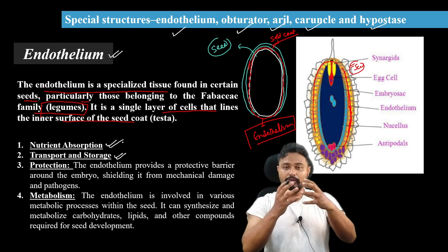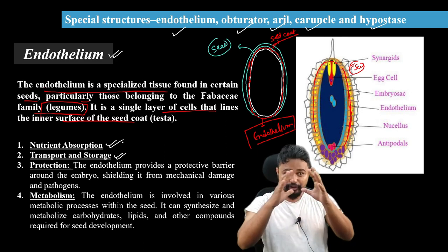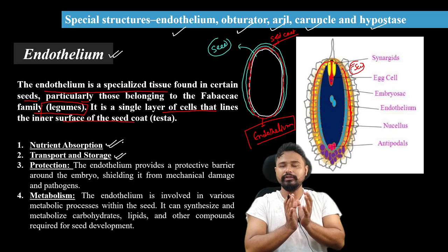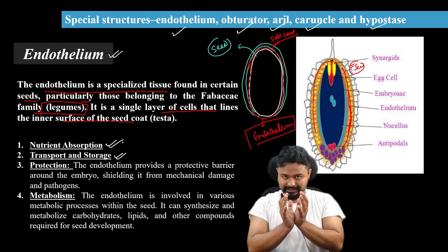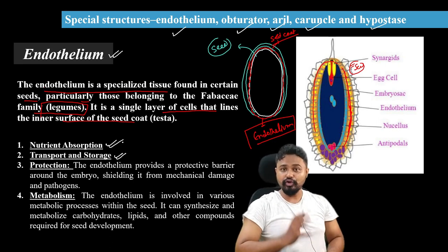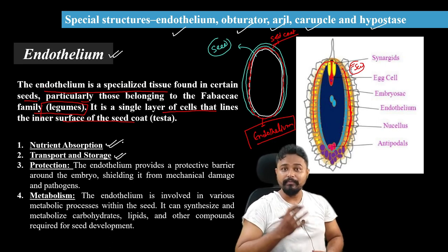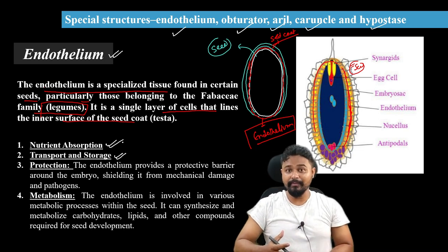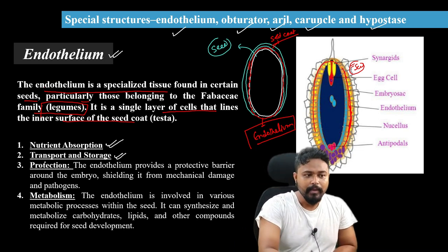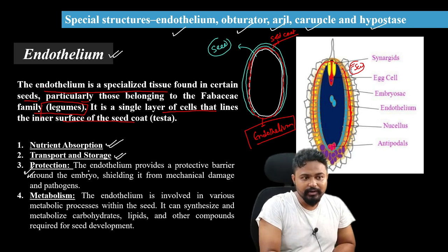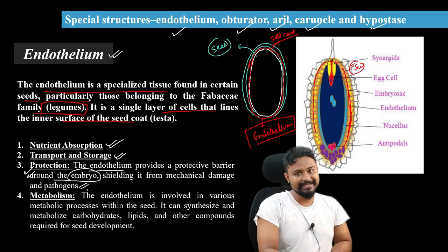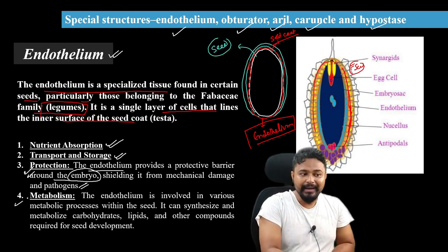The endothelium layer helps transport nutrients to the ovule and embryo. It provides protection to the female gametophyte and embryo. The endothelium provides a protective barrier around the embryo, sealing it from mechanical damage and pathogens.